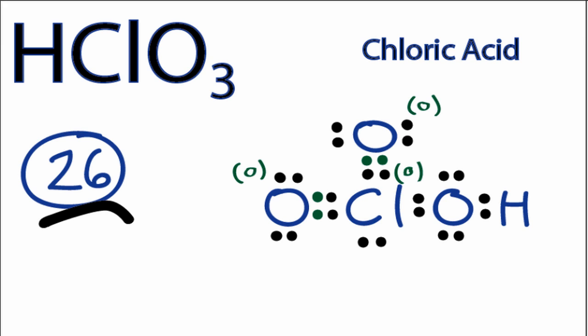By doing that, we now have a formal charge of 0 on all of the atoms in the molecule. So we've used all the valence electrons for the HClO3 Lewis structure. We have octets satisfied on the oxygens and hydrogens. The chlorine has more than 8, but that's okay. It's in period 3, and our formal charges are 0 for all of the atoms on the molecule.